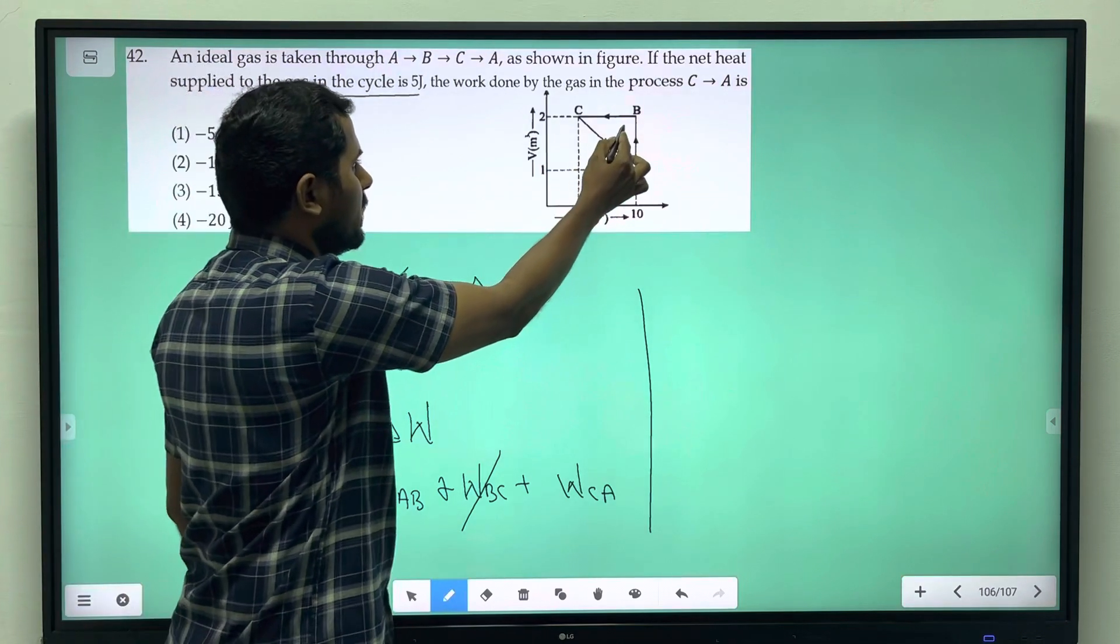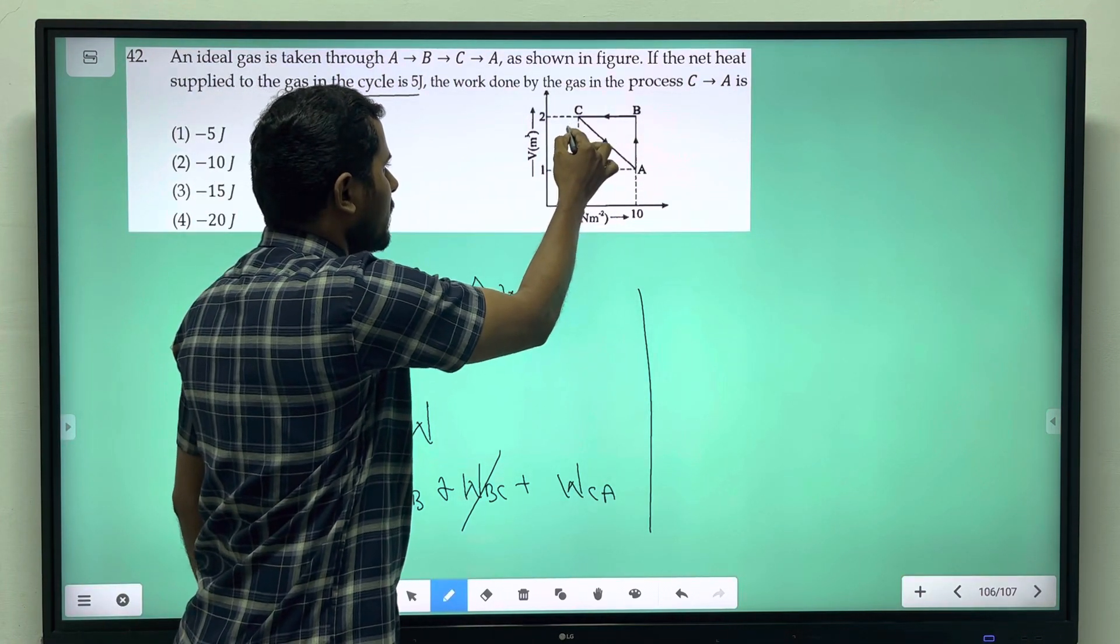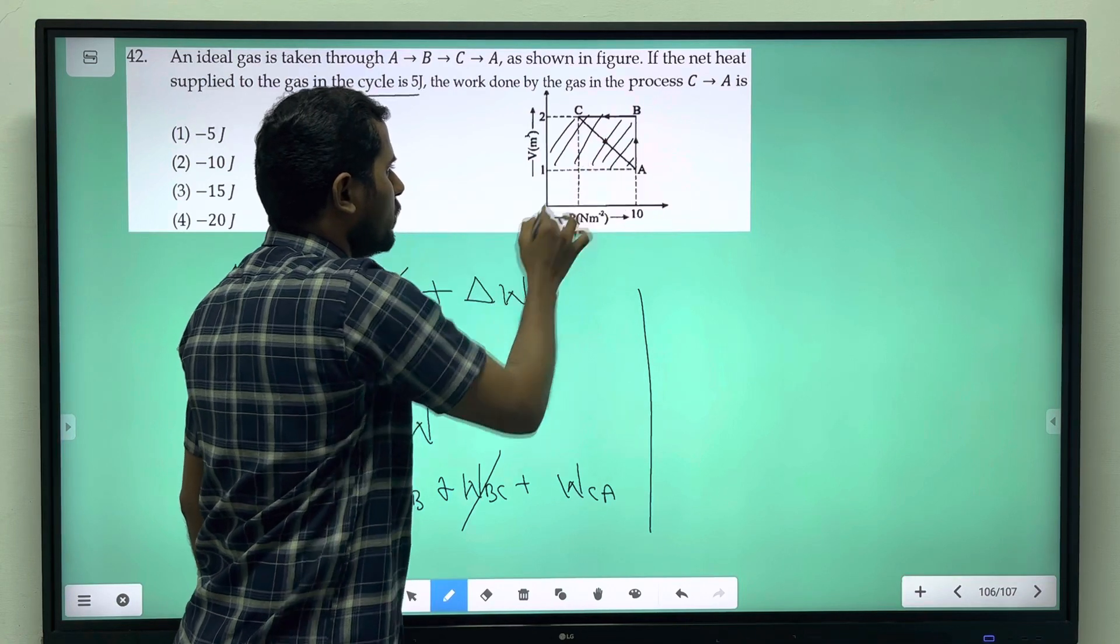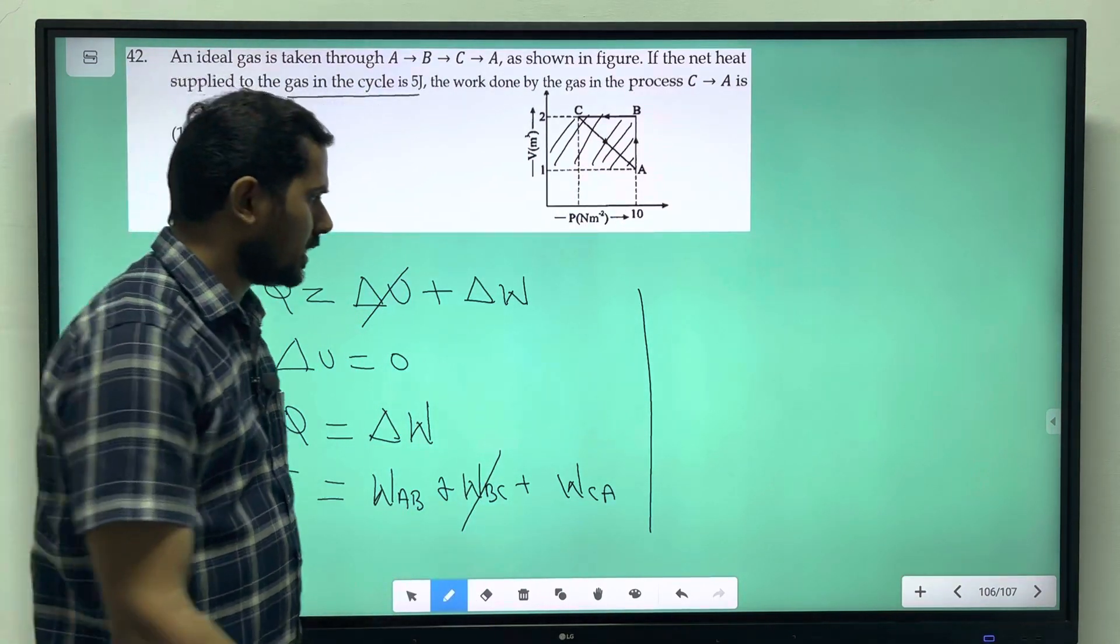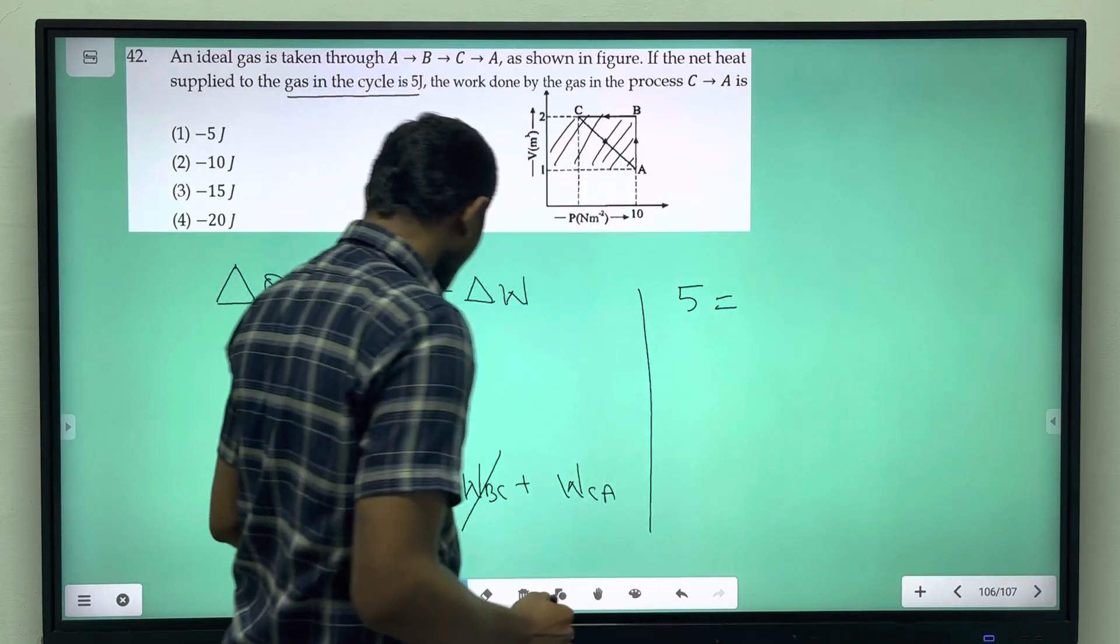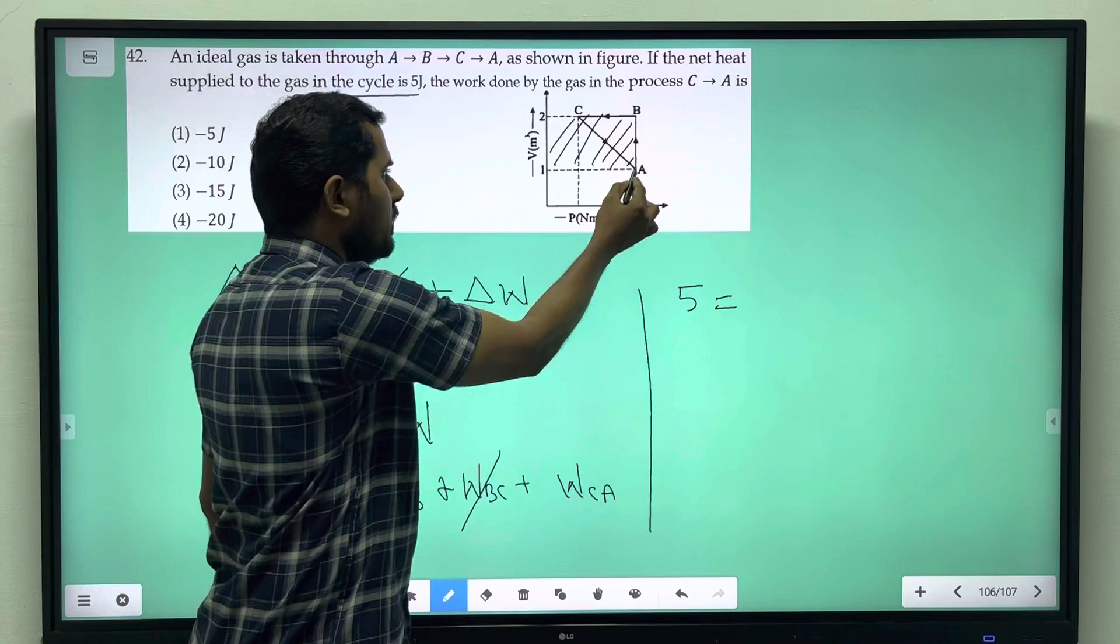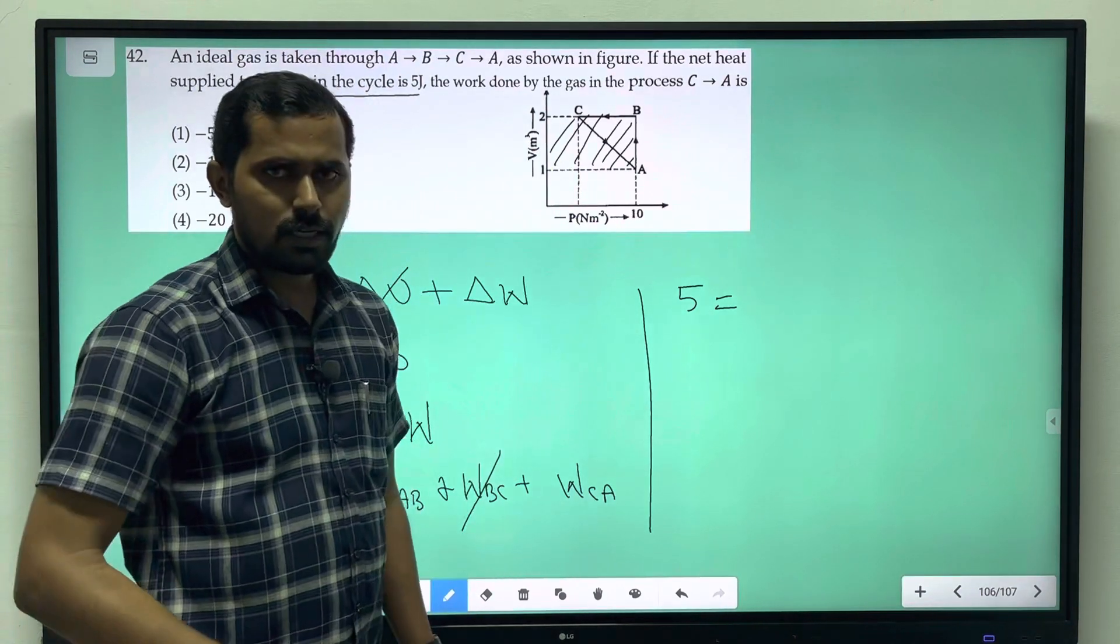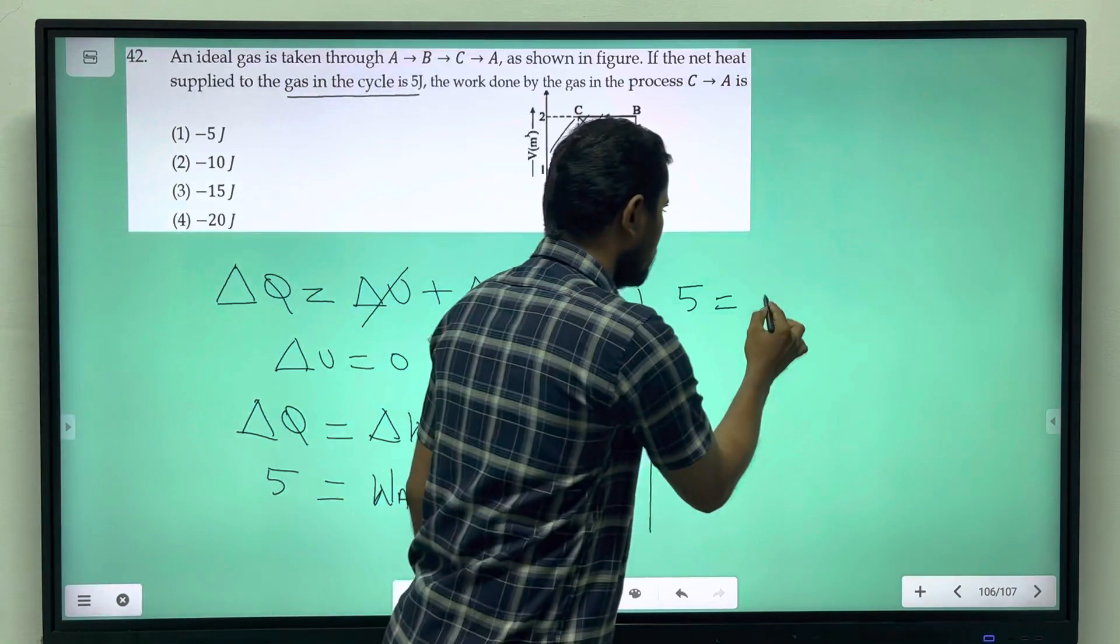Okay. In A-B, we find the area traced to get the work done. The work done A-B is the area: (2 minus 1) times 10, which equals 10.